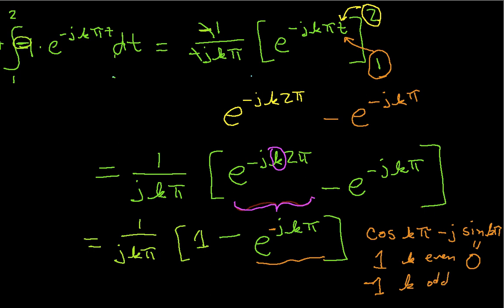And so what I have, then, is in this chunk here, I'm either subtracting 1 from this 1 or negative 1 from this 1. So if k is even, I have 1 minus 1, that's what I have here for k is even, which is 0.